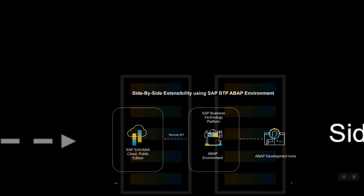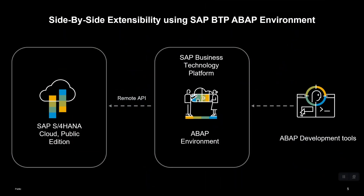Lastly, we have the side-by-side extensibility scenario, wherein the extensions are built on top of SAP BTP environment and run side-by-side to the extended S4HANA system. This model is the preferred option for scenarios which are loosely coupled to S4HANA data, transactions, or apps — for example, the hub scenario that integrates with several ERP systems and cloud services.